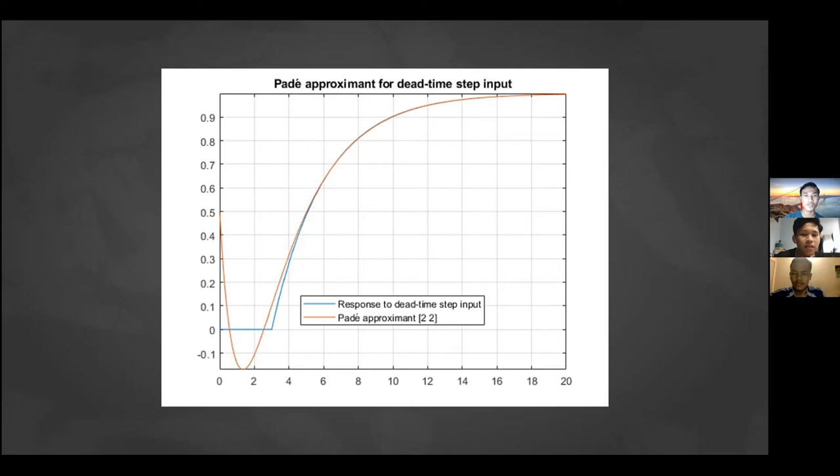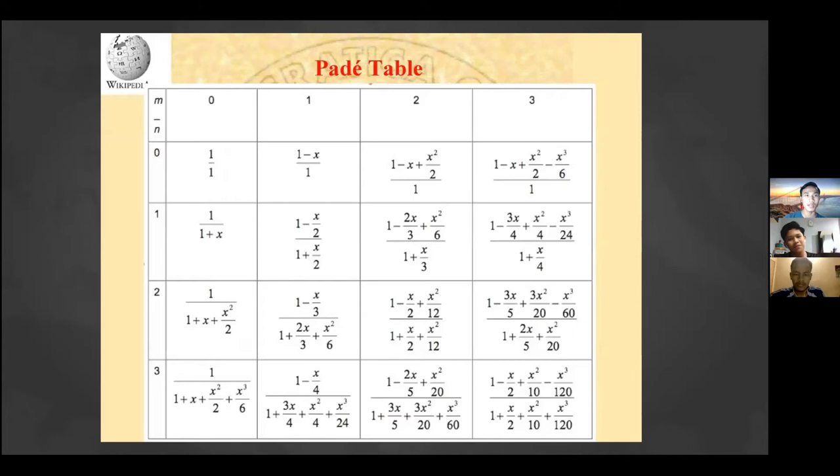Here is the Padé table. As we know, Padé approximation has three series: 1/1, 2/2, and 3/3. In easy terms, 1/1 means the highest power of the series is 1.